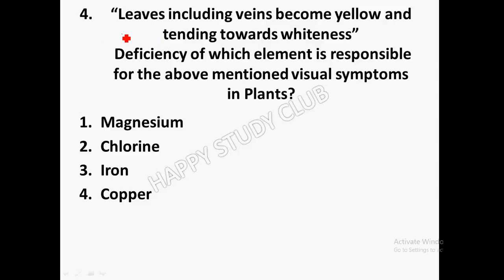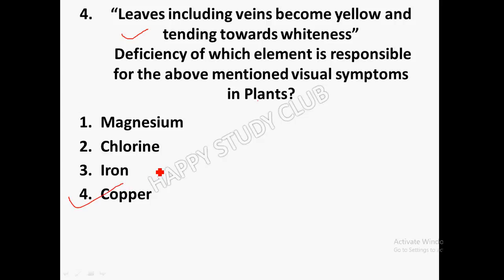Next question: Leaves including veins become yellow and tending towards whiteness — this symptom is given and you have to identify which element deficiency is responsible. The answer is copper deficiency, which causes leaves including veins to turn yellow tending towards whiteness.